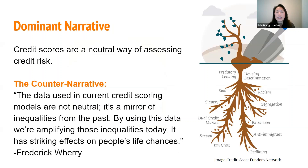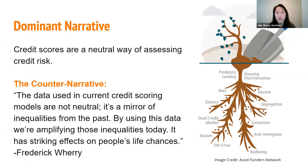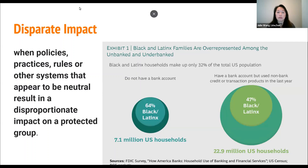A key dominant narrative is that credit scores are a neutral way of assessing credit risk and that an individual's actions determine their score. The counter-narrative comes from Frederick Wary: 'Credit scores and the data used in current credit scoring models are not neutral. It's a mirror of inequalities from the past — by using this data we're amplifying those inequalities today, with striking effects on people's life chances.' Wary runs the Dignity and Debt Network at Princeton University. Teaching credit seems straightforward since the system purports to remove bias using objective metrics.